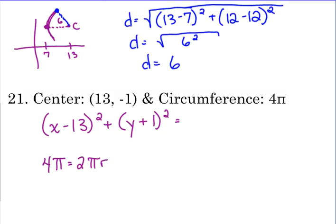The circumference equation is 2πr. They give us the circumference. They tell us that it's 4π, so the π is canceled. So 4 is equal to 2r, so what's my radius? 2. The radius is 2 and 2 squared is 4.